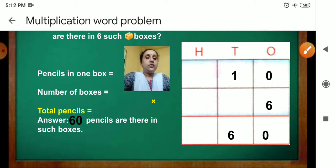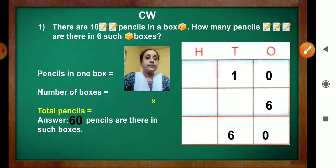Now finish it. Write properly the numbers in tens and ones place. Don't forget to put the multiplication sign. 60 pencils are there in such boxes. Finished?